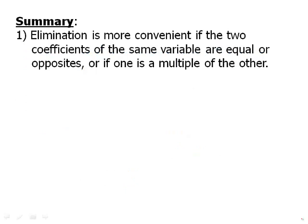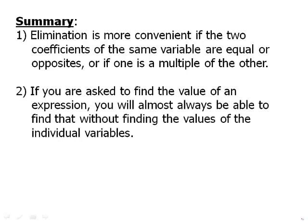Elimination is more convenient when the two coefficients of the same variable are equal, opposite, or one is a multiple of the other. But in the general case, elimination is always easier than substitution. If you are asked to find the value of an expression, you will almost always be able to find that without finding the values of the individual variables — as in that last problem, where it would have been a mistake to solve individually for x and y when all we needed was x plus y.